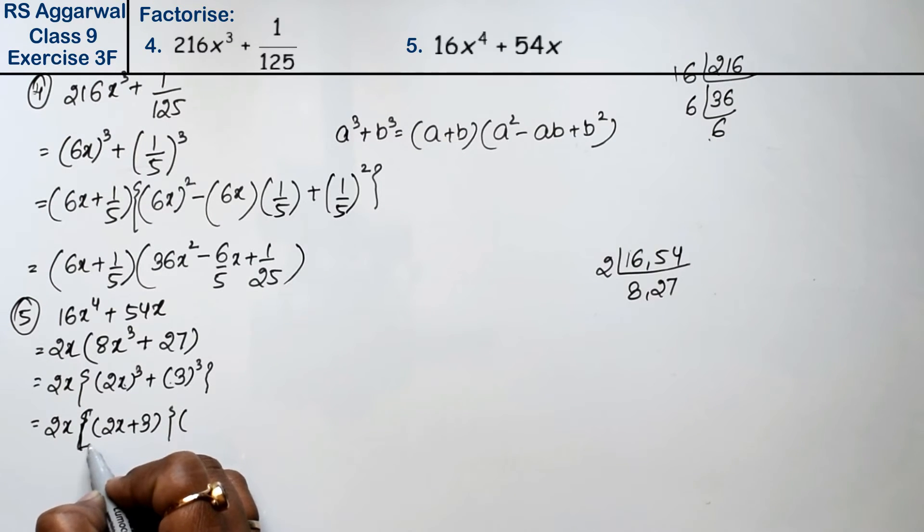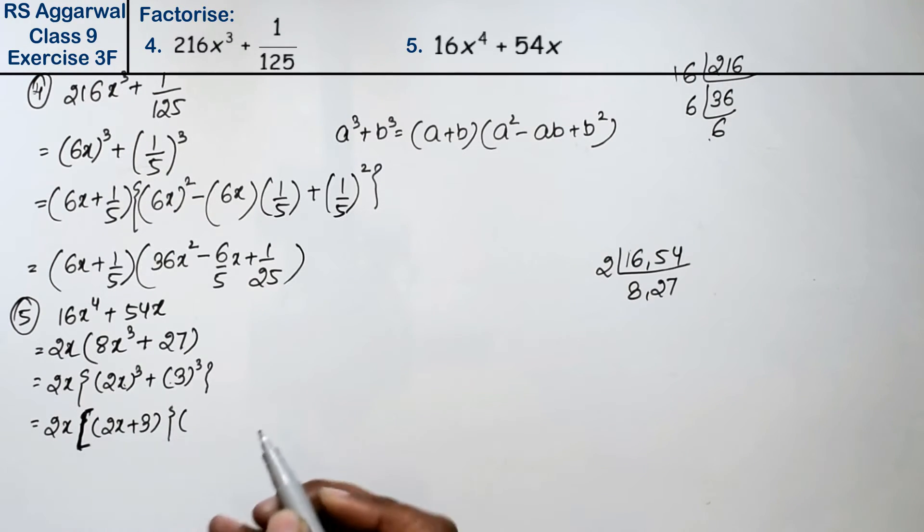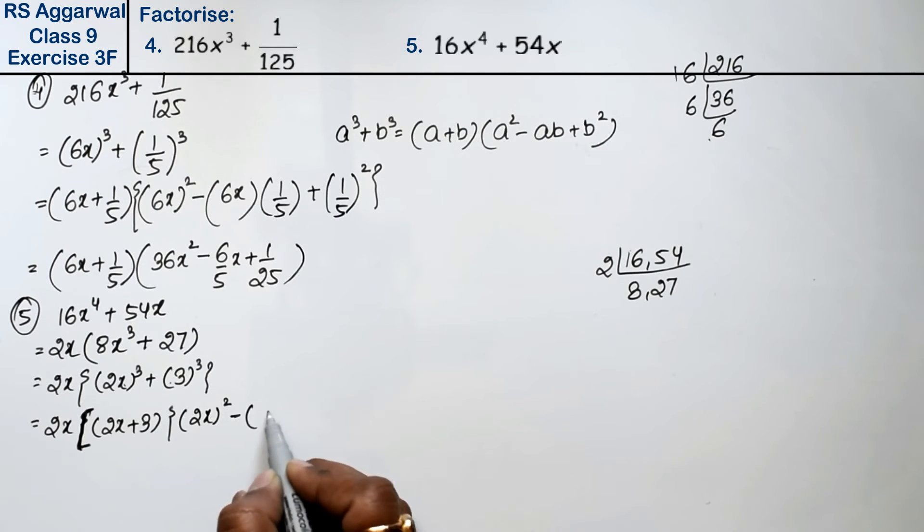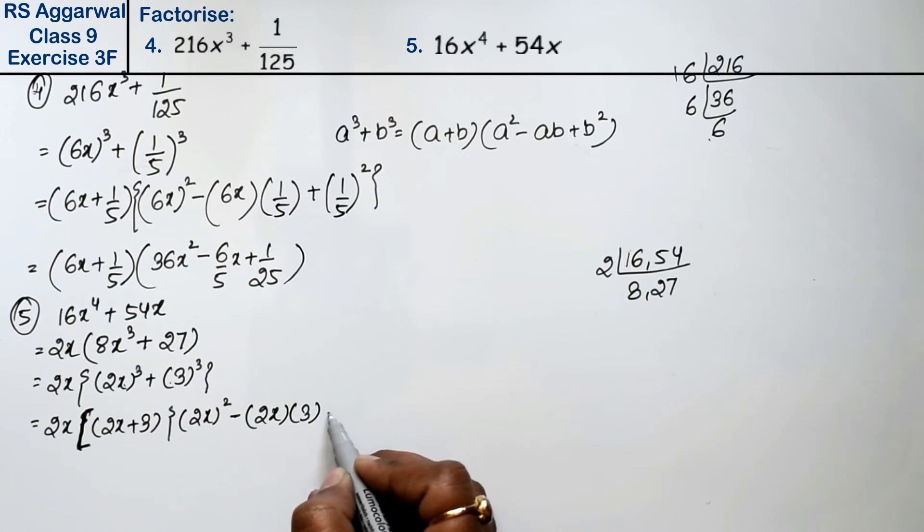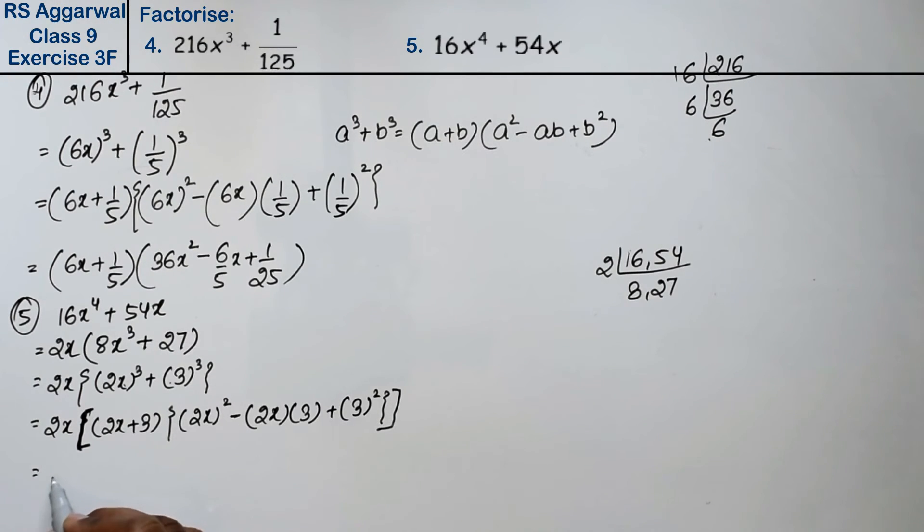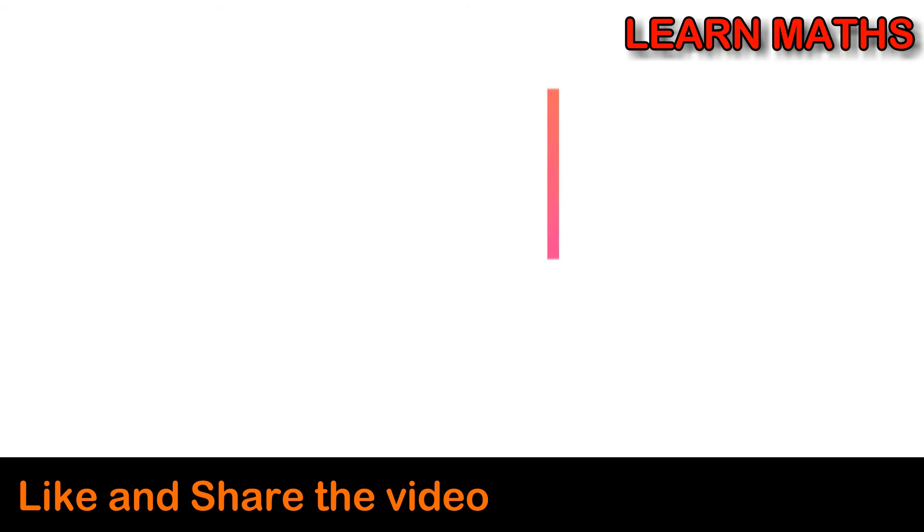We'll use a bigger bracket because there's a middle bracket coming. a square, that is 2x whole square minus 2x into 3 plus 3 whole square. So this becomes 2x times 2x plus 3, and in brackets we have 4x square minus 6x plus 9. This is the answer.